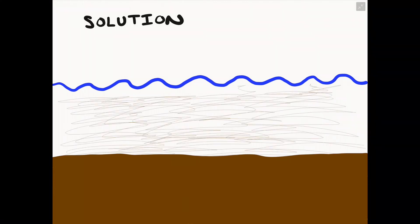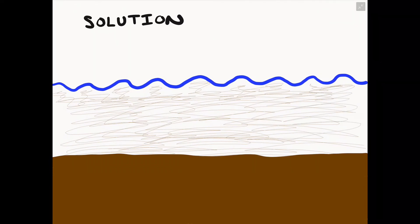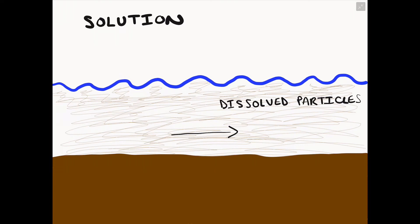The fourth and final type of transportation method is known as solution. This is where particles such as clay or small, really fine sediment is actually dissolved into the sea or ocean or water. This dissolved material just floats along within the sea and therefore is constantly moved through the process of transportation because it is now a part of the water.